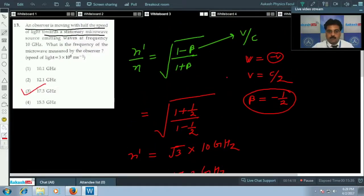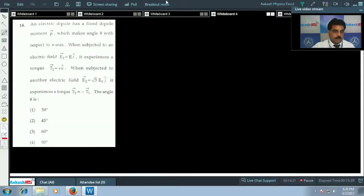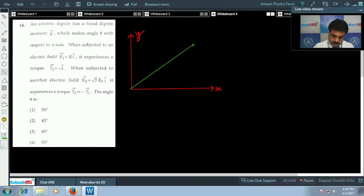Now question number 14. An electric dipole has a fixed dipole moment which makes angle theta with respect to x axis. If I go for the diagram - I consider this is y axis and this is x axis. According to the problem, the dipole is there, this is the dipole moment P, at angle theta from x axis.